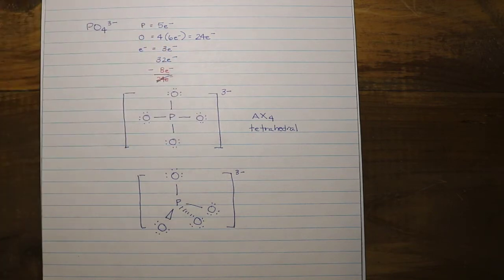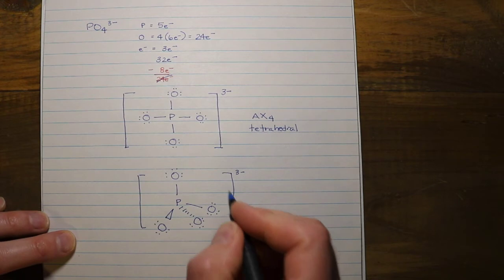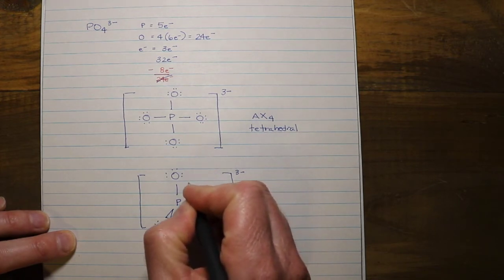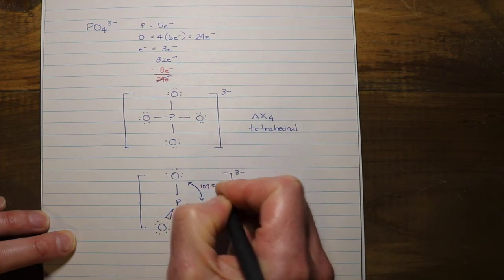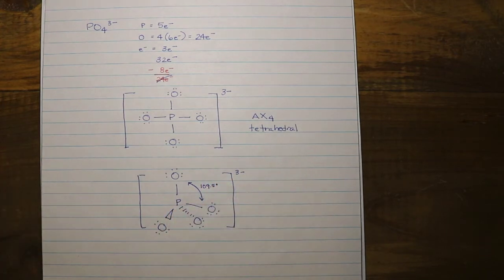And if we were to include some additional information on this, we would say that we have a bond angle here of 109.5 degrees, which is the characteristic bond angle for tetrahedral molecules between adjacent peripheral atoms.